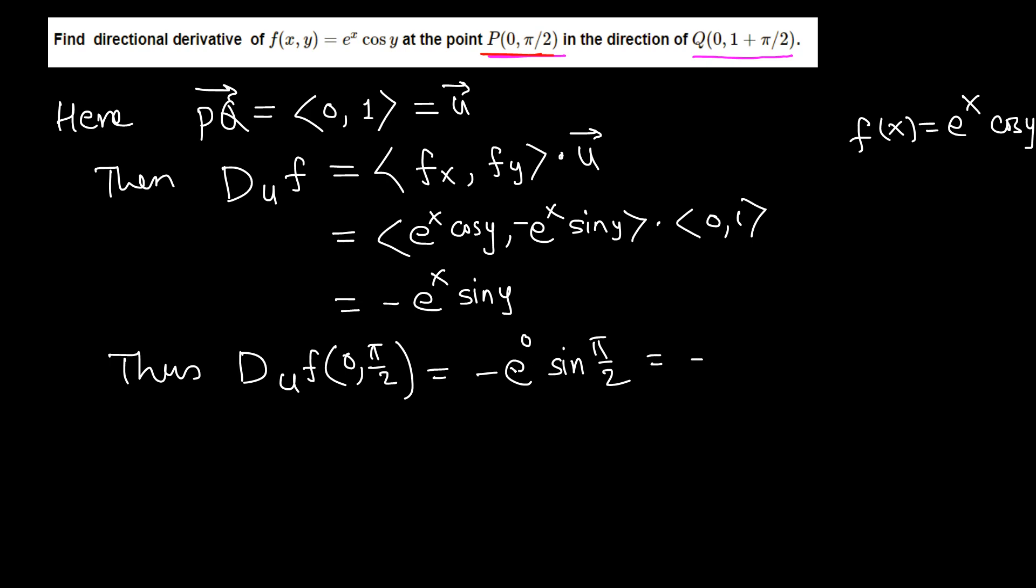Minus e to the 0 is 1, and sine pi over 2 is also 1, so the final answer is negative 1.